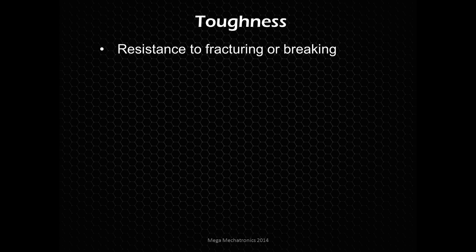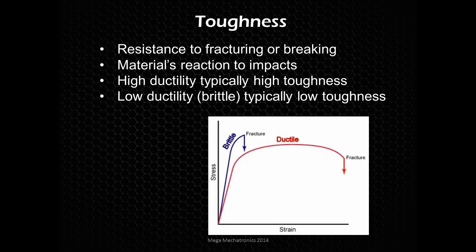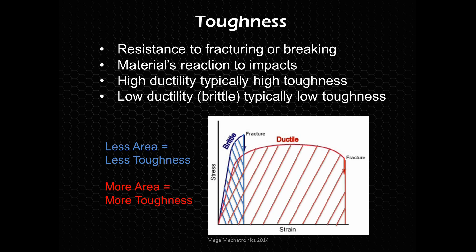Looking at toughness — this is the resistance to fracturing or breaking, how a material reacts to impacts. The more ductile the material, typically the more tough it is — but not always. Low ductility typically means low toughness. A better indicator is the area under the stress-strain curve. Comparing a brittle fracture to a ductile one, the material with more area under the curve will be more tough, and the ductile one is definitely more tough.